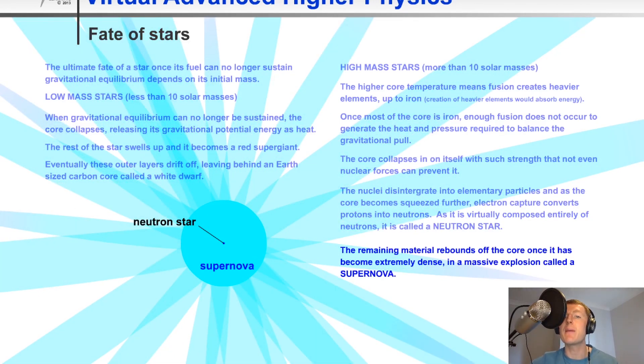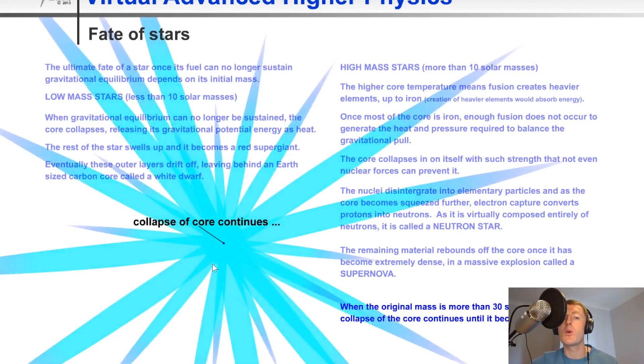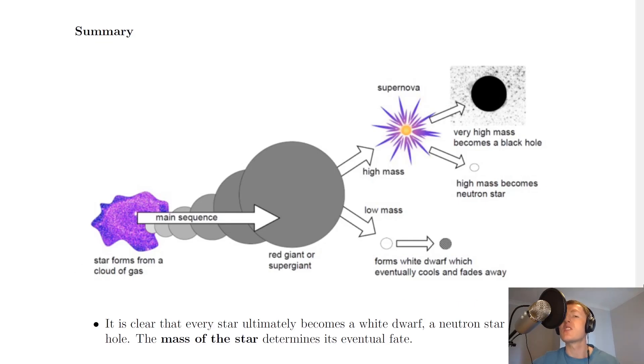And lastly, for the very high mass stars, it's very similar. We've got our extremely dense collapsed core here, and the collapse of the core continues to form a supernova. And then eventually, a black hole forms. So going back to the notes to summarize this then.